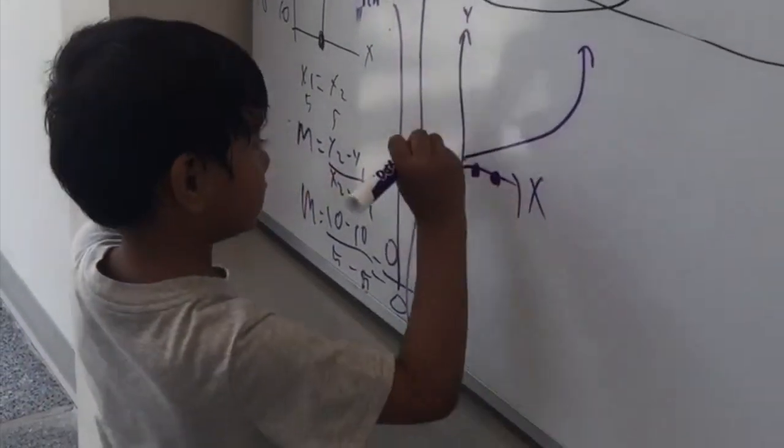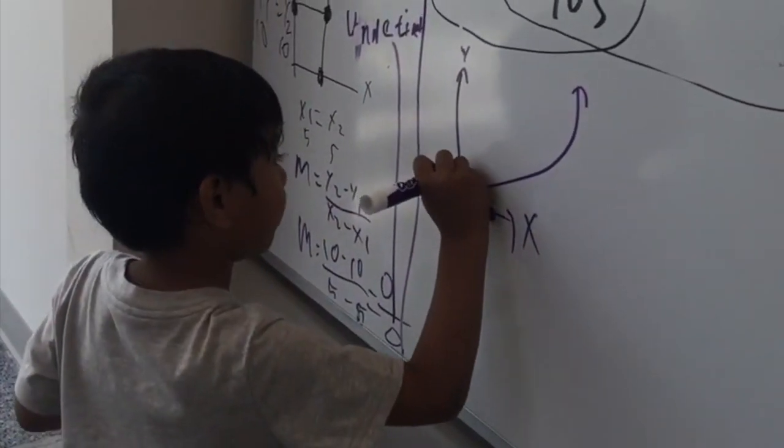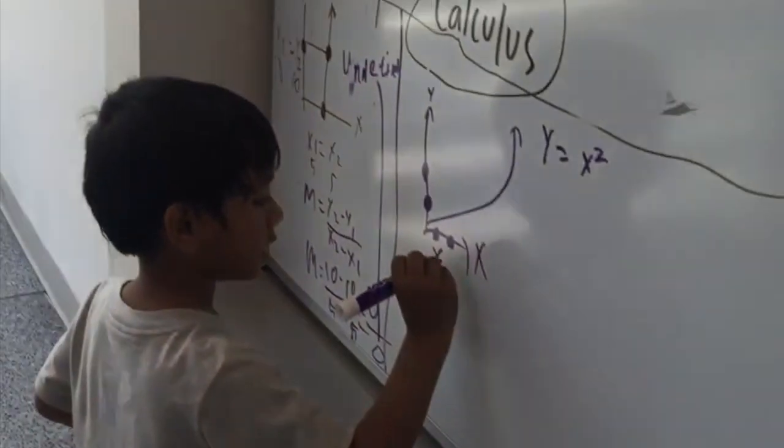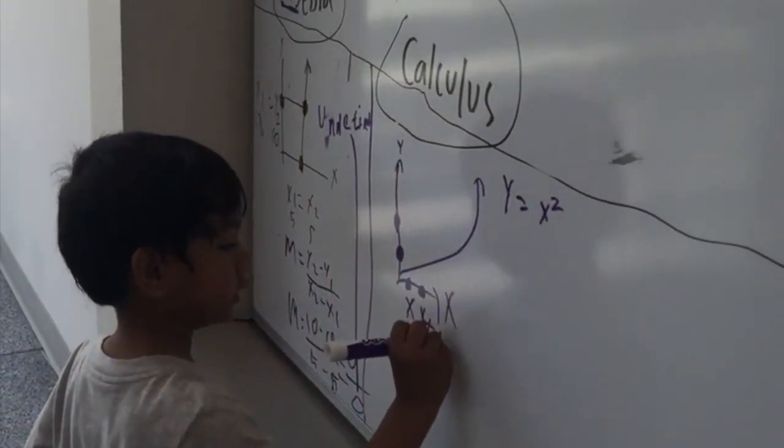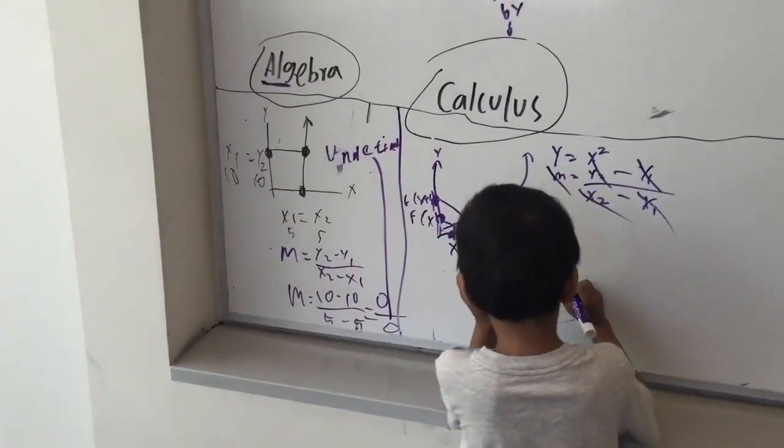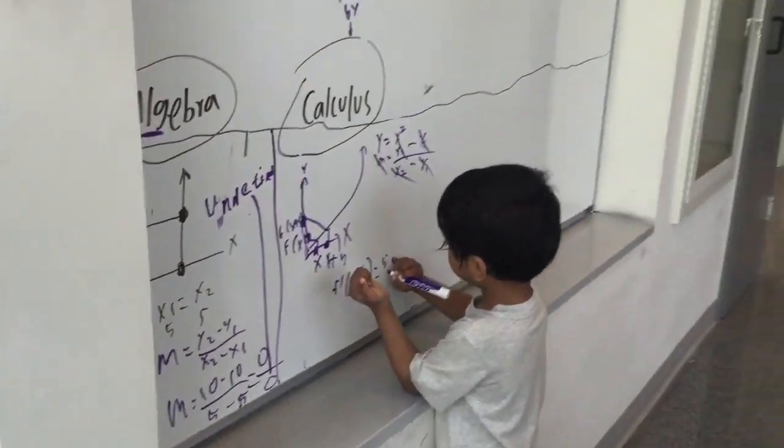f(x) equals x squared. X and x plus h. We connect them as h goes to zero.